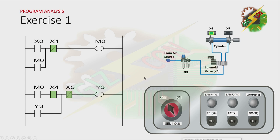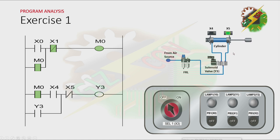Now let's press PB1. As you can see, M0 is energized. Y3 is energized also, and that will cause the cylinder to extend. Now, because we are at our fully extended position, Y3 will turn off. And that will cause the cylinder to retract.